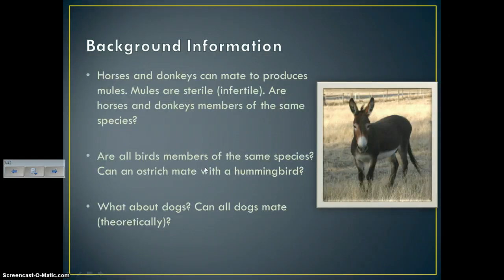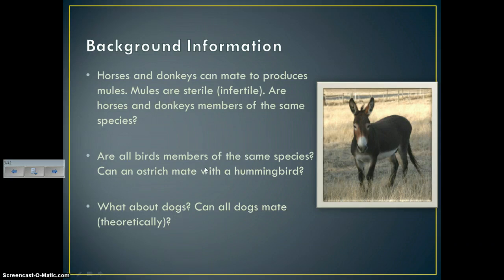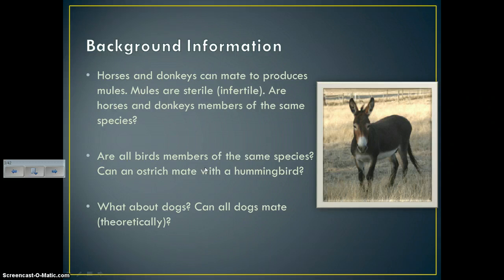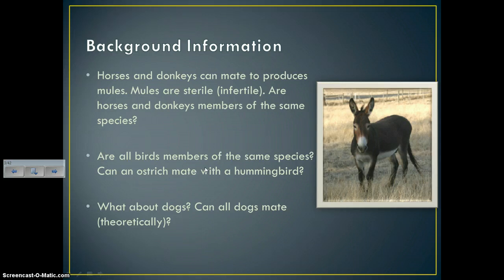I'm going to give you some scenarios — you tell me if those would be members of the same species or different species. Horses and donkeys can mate to produce mules. Mules are sterile, meaning they are infertile. Are horses and donkeys members of the same species? Obviously no, because their offspring can't produce offspring, so horses and donkeys are different species.